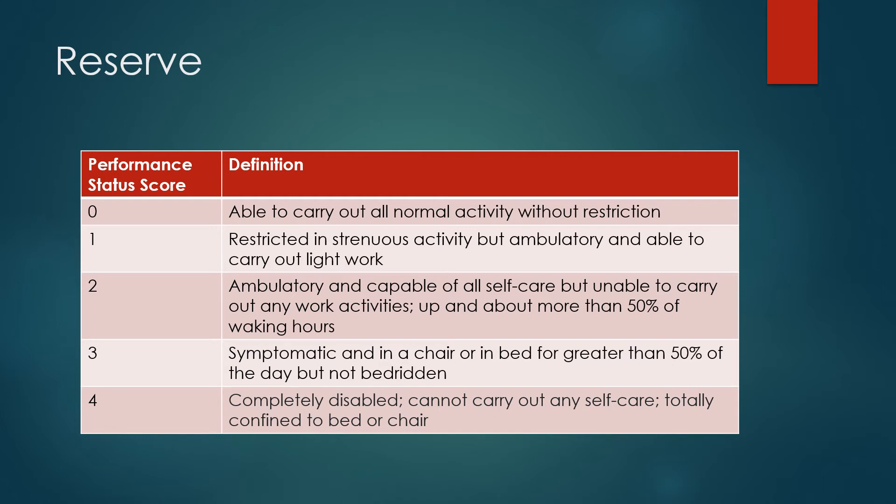Performance status score is ranked from zero to four, with patients at performance status score zero able to carry out all normal activity without any restriction. This progresses to patients who are completely disabled, unable to carry out any self-care, and totally confined to bed or chair when they reach performance status score four.